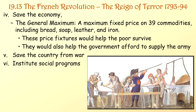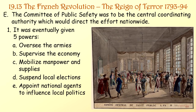They also had to save the economy — hence the General Maximum, a maximum fixed price on 39 commodities including bread, soap, leather, and iron. These price fixtures would help the poor survive and help the government afford to supply the army. They had to save the country from war and institute social programs. The Committee of Public Safety was to be the central coordinating authority directing the effort nationwide, and it was given five powers, including overseeing the armies and supervising the economy.